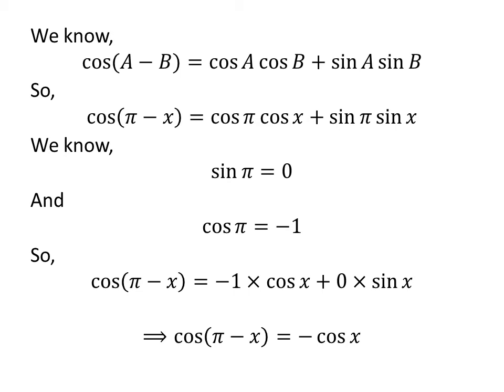So, cosine of pi minus x is equal to minus cosine of x plus 0, which is equal to minus cosine of x. Therefore, the value of cosine of pi minus x is equal to minus cosine of x.